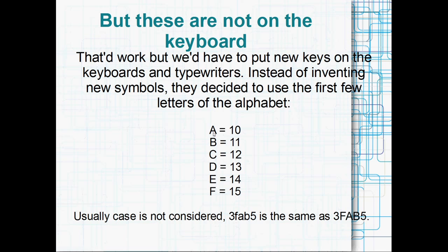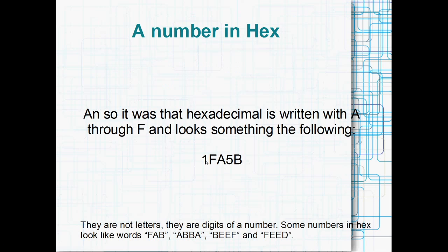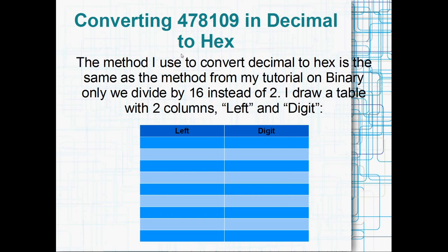So we end up with hexadecimal being a bunch of numerical digits and some letters. Usually case is not considered, so lowercase in hex is exactly the same as uppercase in hex. And we get something like this, 1FA5B could be a hexadecimal number. Or you can write out little words, so FAB or ABBA or BEEF or FEED. But the important thing to note is that that's not actually an F. Right there, that's actually the digit 15. Likewise that's not an A, that's actually the digit 10. And this B right here isn't a B at all. I mean it looks exactly like a B, but when you write it in a hexadecimal number, it actually means 11.